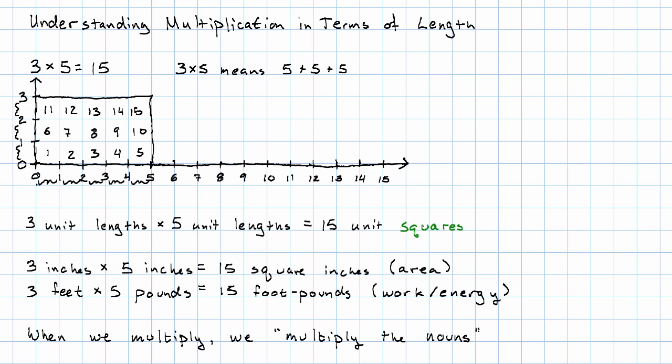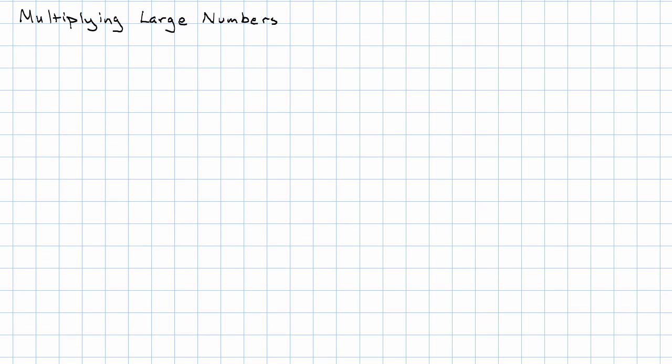Believe it or not, this idea is also going to help us to multiply large numbers. How do we multiply large numbers? And I'm going to start by multiplying some very simple large numbers. I'm going to start by multiplying 7,000 times 400. That is 7,000s times 4,000s. And when I do that multiplication, I multiply 7 times 4 is 28.